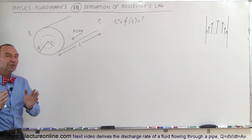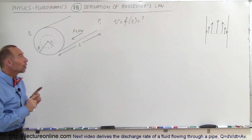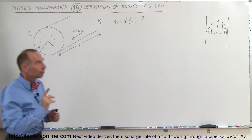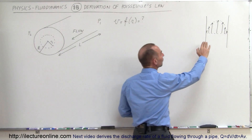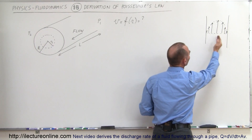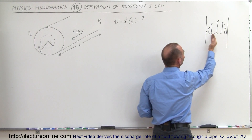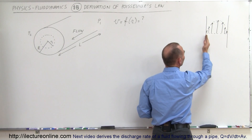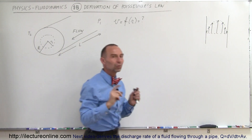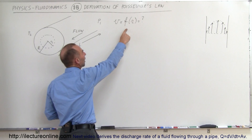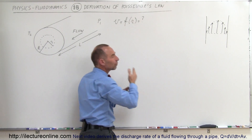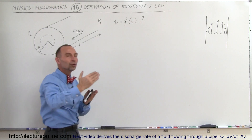Welcome to Electroline. In this video we're going to show you how to derive Poiseuille's law, which is the law that defines the velocity of a fluid through a pipe as a function of the radius. Notice that towards the edges the velocity will be near zero and towards the center the velocity will be a maximum. We're trying to find the function that describes the velocity, which will depend upon the radius — the distance from the center to the edge.